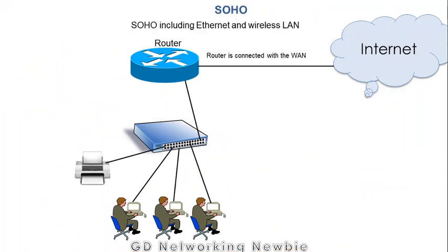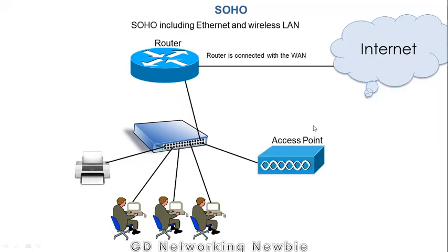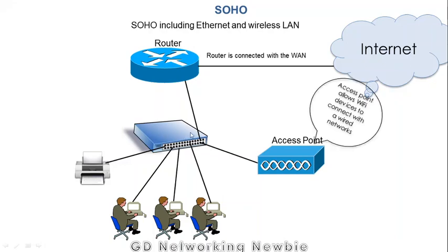The modern SOHO also includes a wireless LAN, that is called Wi-Fi. In addition to the previous setup, there is a device called a wireless access point. This wireless access point is connected with an Ethernet port on the switch, and that access point is used to allow Wi-Fi devices to connect with the wired network. The access point is there to facilitate the connection to Wi-Fi enabled devices.